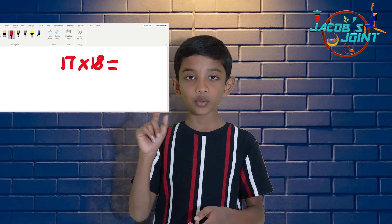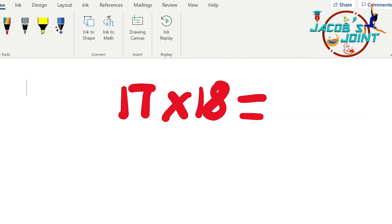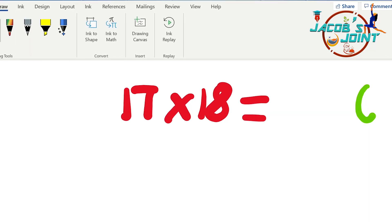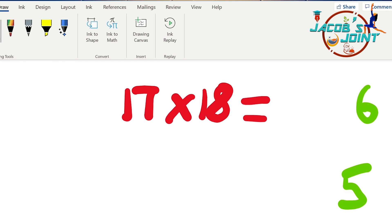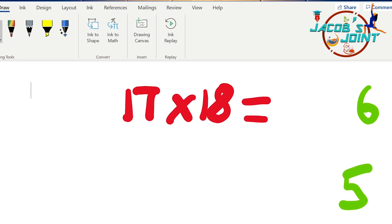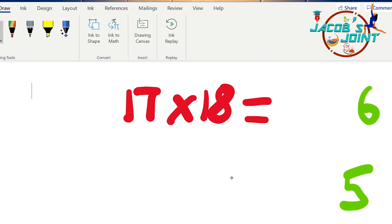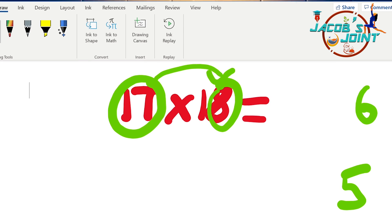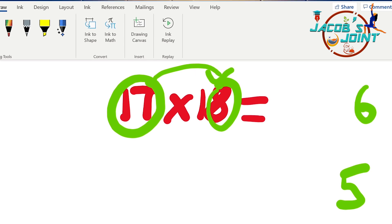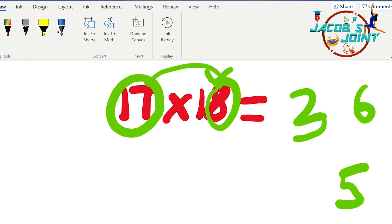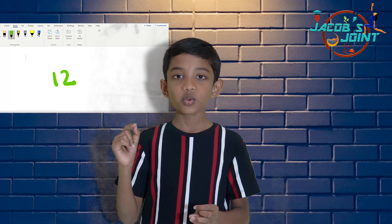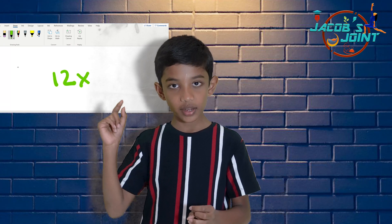17 into 18. First step: 7 into 8 equals 56 — write 6, carry over 5. Second step: 17 plus 8 equals 25. 25 plus 5 equals 30. The answer is 306.